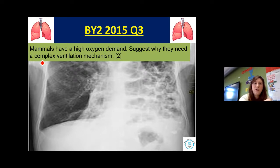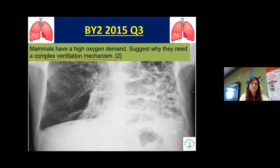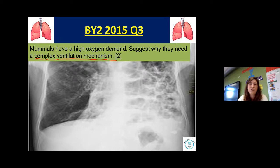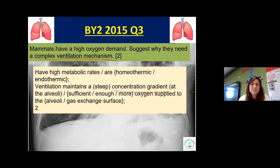Suggest why mammals need a complex ventilation mechanism. Mammals have high metabolic rates, and ventilation maintains a concentration gradient. Hopefully you've got those two points.